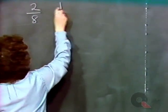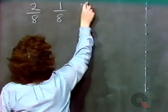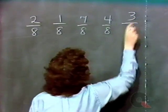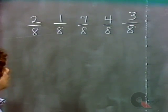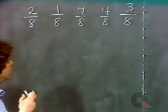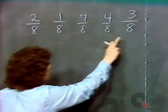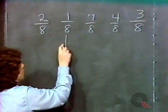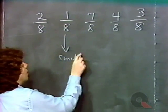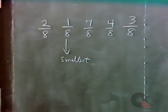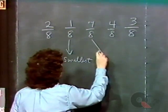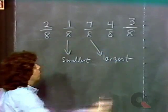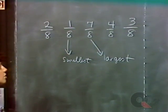Two-eighths, one-eighth, seven-eighths, four-eighths, three-eighths. This is a particularly easy example because all of the fractions have the same denominator. When they all have the same denominator, the smallest fraction is the one with the smallest numerator, and the largest fraction is the one with the largest numerator. So in this group of fractions, one-eighth is the smallest, seven-eighths is the largest.